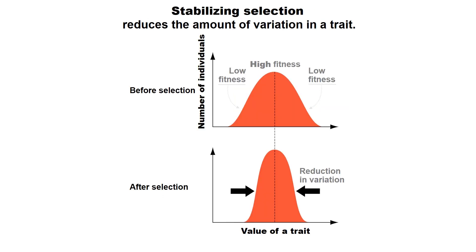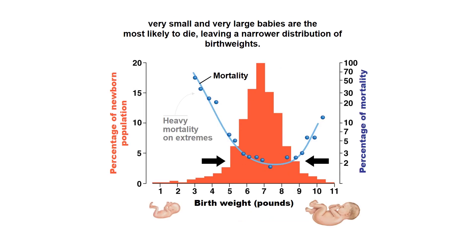You can also have stabilizing selection, which is the exact opposite of directional selection — it actually reduces the amount of variation. A great example occurs in humans. If you're too large, you're likely to become damaged as you're being born or you could damage your mom, increasing mortality rates. On the other side, if you come out too small, you also exhibit higher mortality. So birth weight is supposed to be right around seven pounds. There is this stabilizing selection for reducing the extremes — you don't want to be too large or too small.